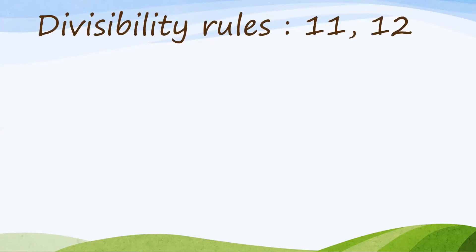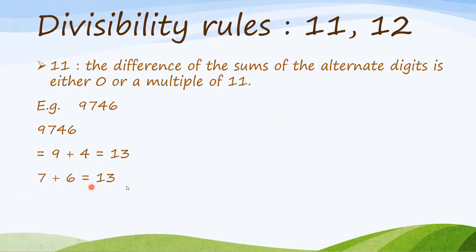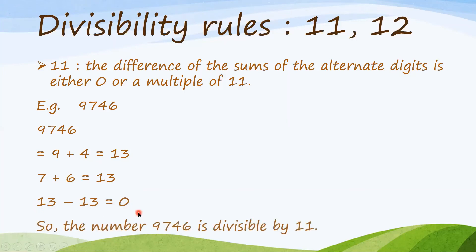Divisibility Rules of 11 and 12. The Divisibility Rule of 11 says that the difference of the sums of the alternate digits is either 0 or a multiple of 11. For example, the number 9746: we add 9 and 4 to get 13, and 7 plus 6 to get 13. And 13 minus 13 is 0. So, the number 9746 is divisible by 11.